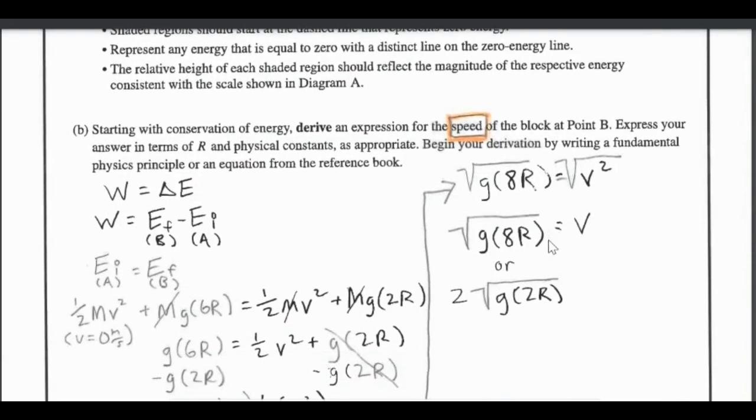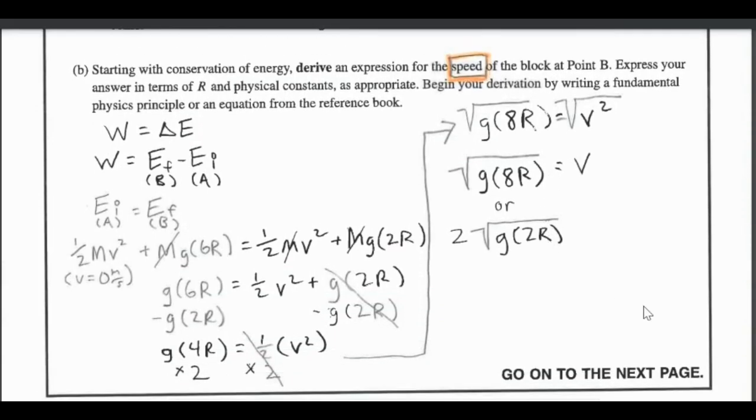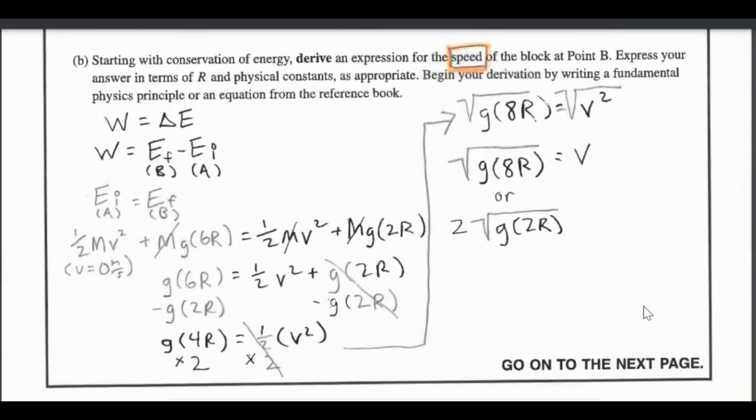Going down to our next one, B is definitely a little tougher. It says starting with the conservation of energy, derive an expression for the speed of the block at point B. Express your answer in terms of R and physical constants as appropriate. Begin your derivation by writing a fundamental physics principle or an equation from the reference book. I take a look at my formula sheet, work equals delta E. We have no work, no external forces acting on our system here. The energy of position B minus the energy of position A can be set equal to each other to show that energy is conserved.